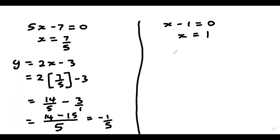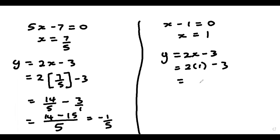Using the same equation, y equals 2x minus 3, substituting x equals 1 gives us 2 times 1 minus 3, so y is equal to minus 1. And that would be the answer. So when x is equal to 7 over 5, y is equal to negative 1 over 5, and when x is equal to 1, y is equal to minus 1.